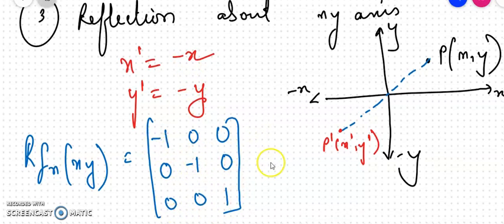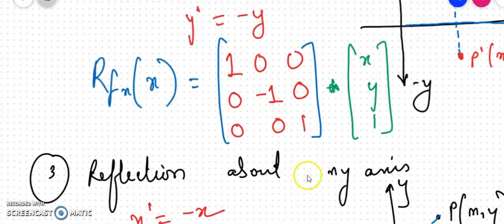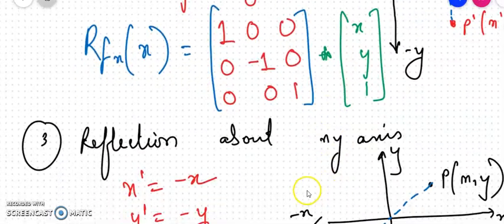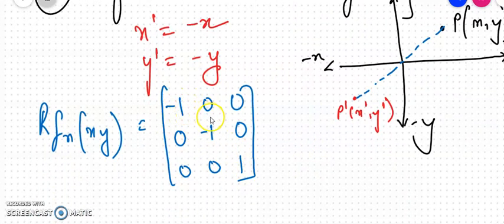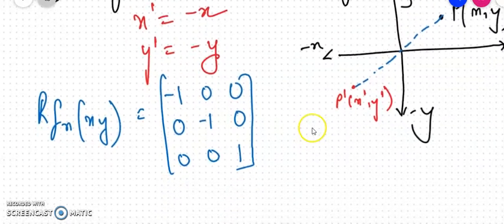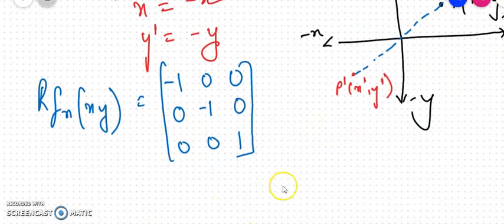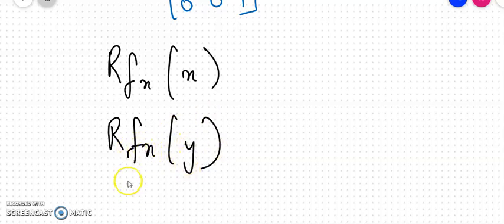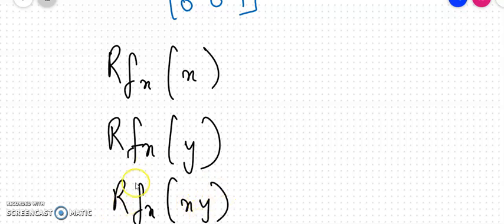You would have observed that in reflection you get only diagonal values, and those values are either 1 or −1. Wherever you wish to change, you put −1; wherever there is no change, you put +1. So we have covered three types: RFX about X-axis, RFY about Y-axis, and RFXY about X,Y-axis. In our next session, we'll see reflection about an arbitrary line y = mx + c.